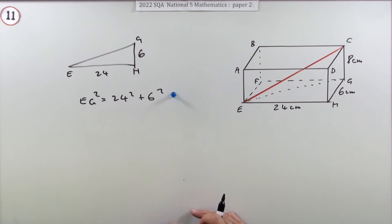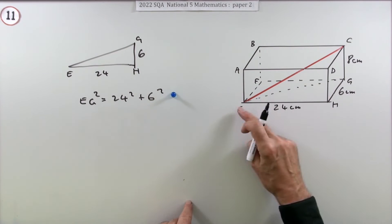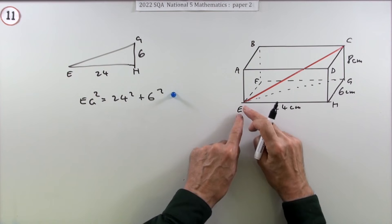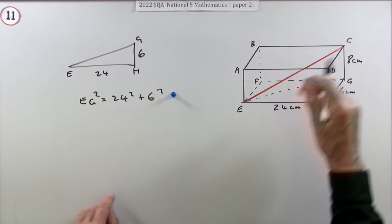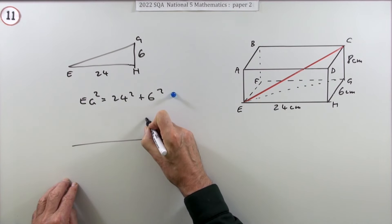It would be better just leaving EG squared alone like this and transferring that to the next part. So that'd be the first mark. You could choose a different route, of course. You don't need to take that triangle first. You could have worked up here, but that's probably what you would look at.